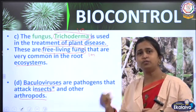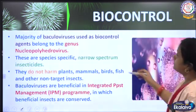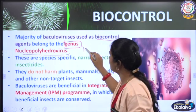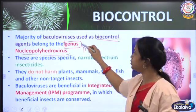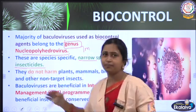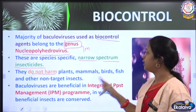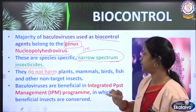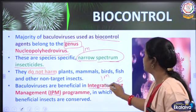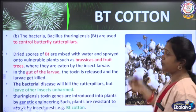Baculoviruses are pathogens that attack insects and arthropods, including the caterpillar stage. The majority of baculoviruses used as biocontrol agents belong to the genus Nucleopolyhedrovirus — another one-mark question. These are species-specific, narrow-spectrum insecticides, so they can be used to target a particular species without harming other plants. This is beneficial in integrated pest management, or IPM — another important abbreviated term.